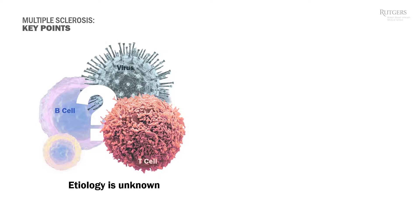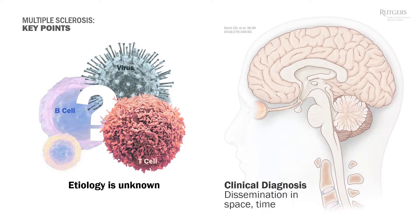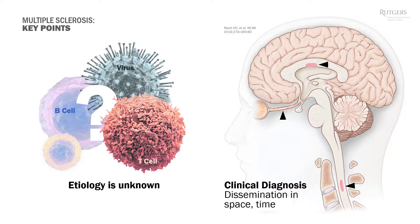MS is a clinical diagnosis. We don't have a simple blood test, genetic test, MRI, or even brain biopsy that will give us a definitive answer. It's a clinical diagnosis of exclusion — a combination of clinical and laboratory features — and other disorders have to be ruled out.